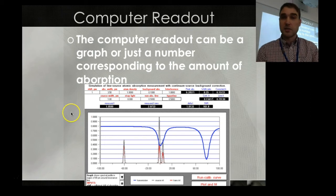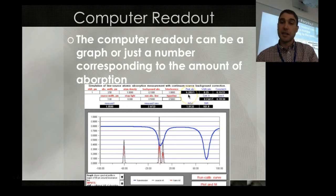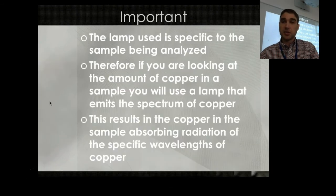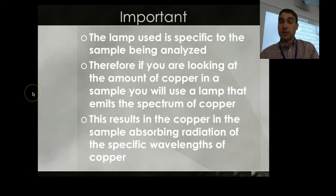If we have a look at this one here, we can see we have an absorbance number here, and that's the number that you could record. It's important to note that the lamp that you use has to be specific to the sample that you're analyzing. If you want to look for copper, you need to have a copper lamp producing the wavelengths that are particular to copper, so that any copper in the sample will absorb those wavelengths that are being emitted by the lamp.